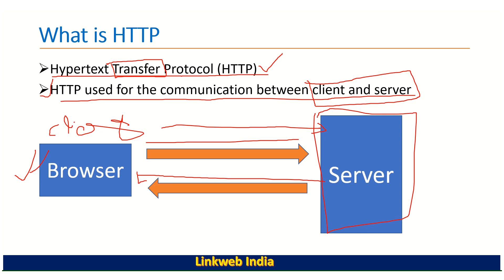The web server receives the request that you made from the browser, then the server runs an application, processes the request, and returns an HTTP response back to the browser — sending it to the client.